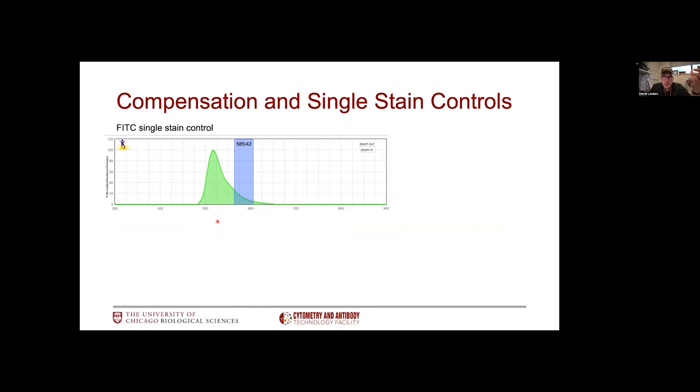To do proper compensation, we'll need single stain compensation controls. These are cells or beads stained with every single one of your fluorophores one at a time. You'll have as many controls as you have markers used in your assay. Compensation essentially is evaluating the impact of a specific fluorophore on the other detectors available on the instrument. We're trying to establish a situation where that fluorophore has no impact whatsoever.